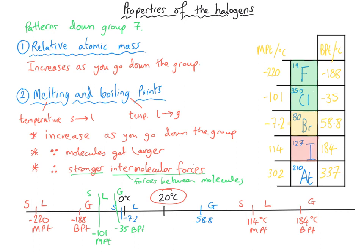Following the pattern down the group, we can predict that astatine will also be a solid at room temperature — its melting point is 302°C, so room temperature is nowhere near hot enough to melt it. Whilst you don't need to memorise these values, they explain why fluorine is a yellow gas, chlorine is a dense green gas (used in the First World War in the trenches), bromine is one of only two liquids at room temperature (the other being mercury) and appears as a red-brown liquid that easily becomes an orange poisonous vapour, and iodine is a dark grey solid that turns into a red vapour quite easily.